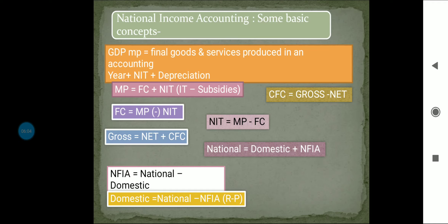CFC, consumption of fixed capital, is the second name for depreciation. It makes the difference between gross and net. Factor cost means: to get factor cost from market price, we deduct NIT — so FC equals MP minus NIT. To calculate NIT, we deduct factor cost from market price. NIT may be positive or negative. Gross means net plus consumption of fixed capital.